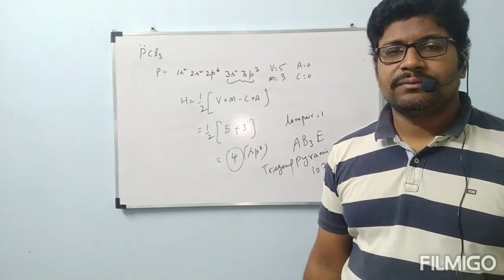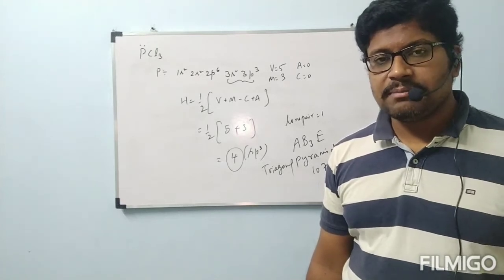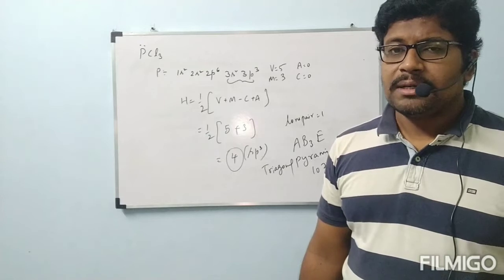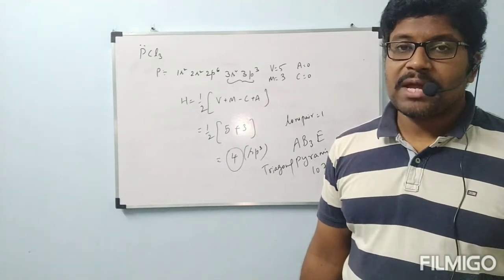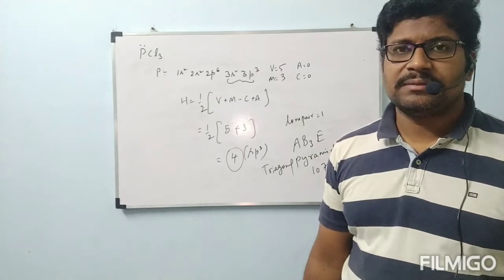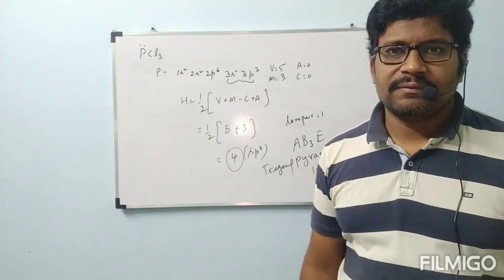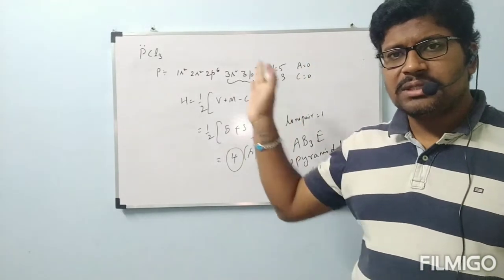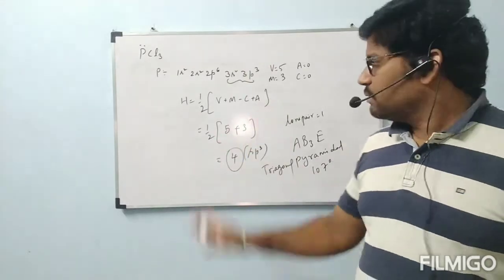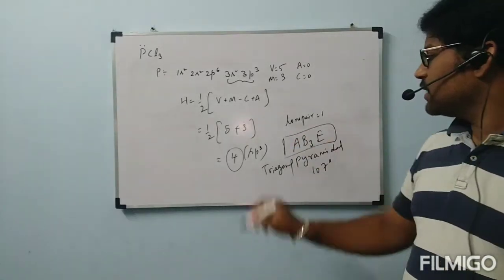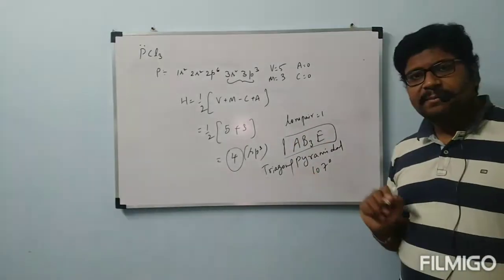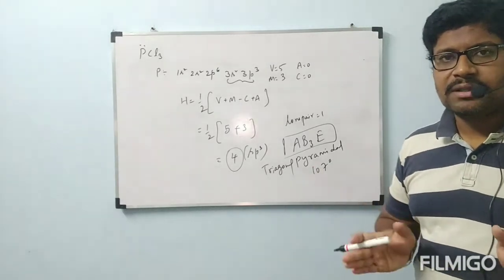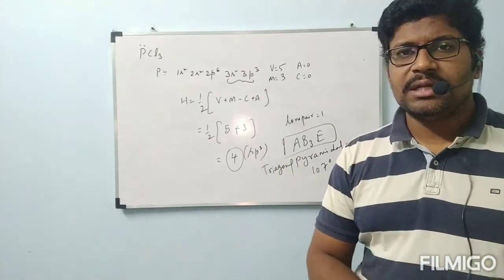Now we move to the next concept within covalent bond. We have completed valence bond theory, hybridization, and VSEPR theory. Next we will study molecular orbital theory, MOT. But first we need to understand why MOT was established. If you are very familiar with the tabular column models, identifying shapes will be easy.